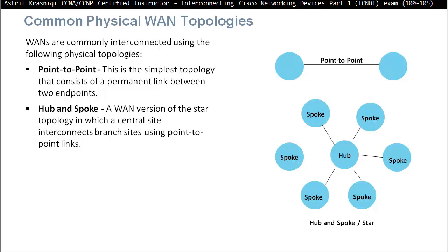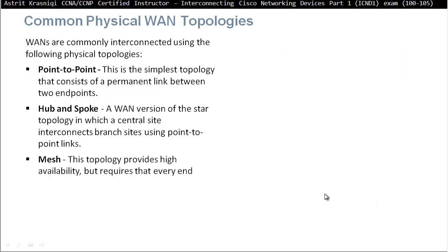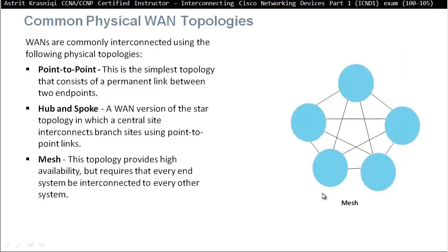Hub and spoke is a wide area network version of the star topology in which a central site interconnects branch sites using point-to-point links. As you can see, here we have a hub connected to the spokes. The problem with hub and spoke topology is that if the hub — maybe that's the headquarters connecting with the branches — if the headquarter link fails, the branches will not be able to communicate with each other. That's one of the disadvantages of hub and spoke topology.